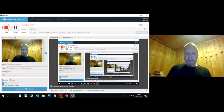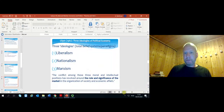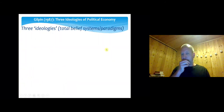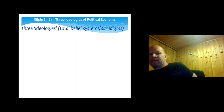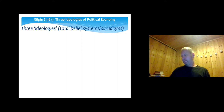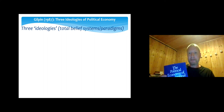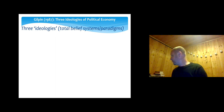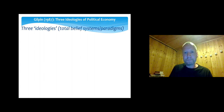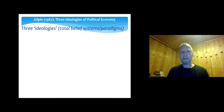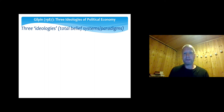Part three is about Robert Gilpin's 'Three Ideologies of Political Economy,' a chapter from his book 'The Political Economy of International Relations,' which is really an introduction and overview from the 1980s that has been widely used in courses throughout the years. This chapter reviews the basic frameworks of thinking about how the economy can and should be organized — what he calls ideologies.